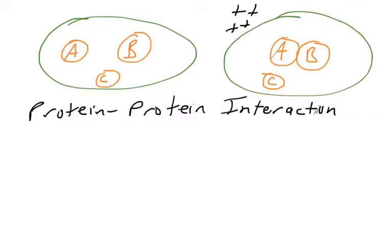So the cell on the left, for example, has proteins A, B, and C that are not interacting. Proteins in the cell on the right have been treated with something, and proteins A and B interact. Proteins interact in the cell all the time.